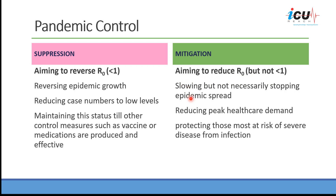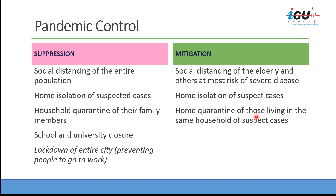The mitigation strategy will reduce the peak health care demand, so we'll be able to accommodate cases within the health care system, and with this strategy we should protect those most at risk of severe disease from infection. In terms of what we do with these two strategies: in the suppression strategy, number one is social distancing of the entire population.